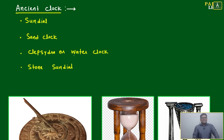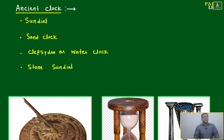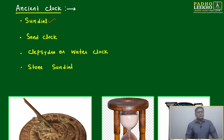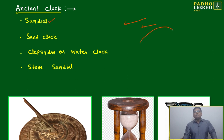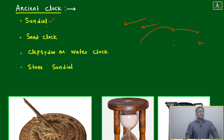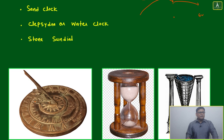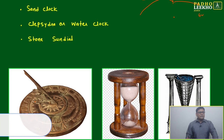Now we'll try to understand a few ancient types of clocks, because modern clocks were not there at that time. One very famous ancient clock was the sundial. It was based on the shadow of the sun throughout the day. From morning to noon, the length of the shadow keeps decreasing until it is almost negligible at noon. Then it starts increasing again towards evening but in the opposite direction. Based on the length of the shadow, different markings were made.